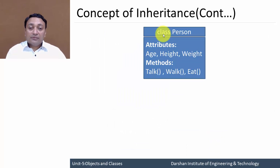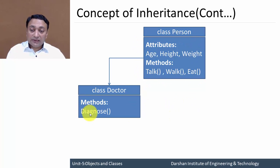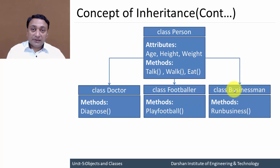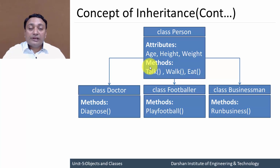So I am creating one class Person having attributes age, height, and weight, and writing code for talk, walk, and eat. Now I am deriving class Doctor from Person, so Person is the parent class and Doctor is the child class. Doctor will inherit these properties from class Person and implement one unique member function, which is diagnose. Similarly, class Footballer will inherit these properties and implement play football, and class Businessman will inherit all properties from Person and implement run business. This way we avoid repeating code in all three classes by writing it once in the parent class and inheriting it in child classes.